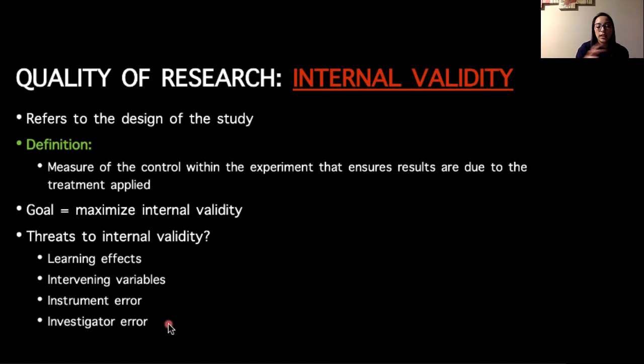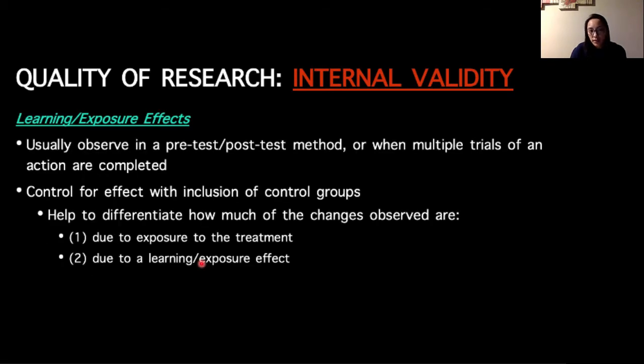The goal is to maximize internal validity, or maximize the transfer of what we're doing inside of the experiment as it applies to the results we actually get. Learning or exposure effects are more often observed in pre- and post-test scenarios when multiple trials of an action are completed. Usually we can control for learning effects when we have the inclusion of a control group, so that we can differentiate how much of the changes observed are due to the exposure of the treatment, and then how much are actually due to learning or the exposure effect.